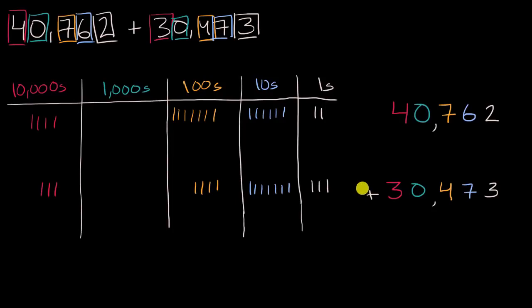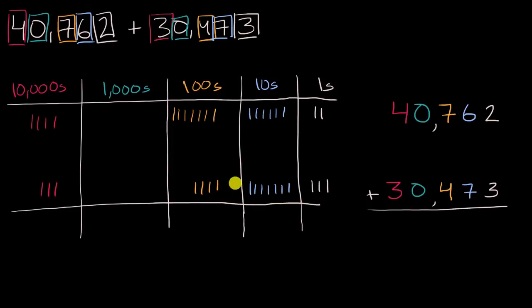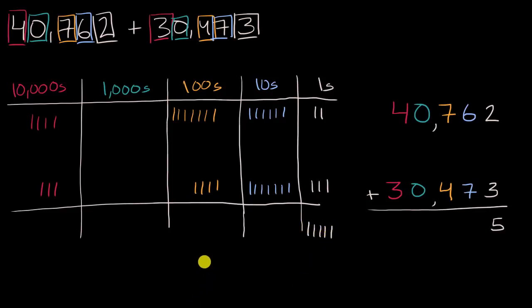So now let's add up everything. In the standard method, we would start at the lowest place. We'd say: two ones plus three ones is equal to five ones. And similarly, two ones plus three ones gives us five ones. Nothing fancy there.